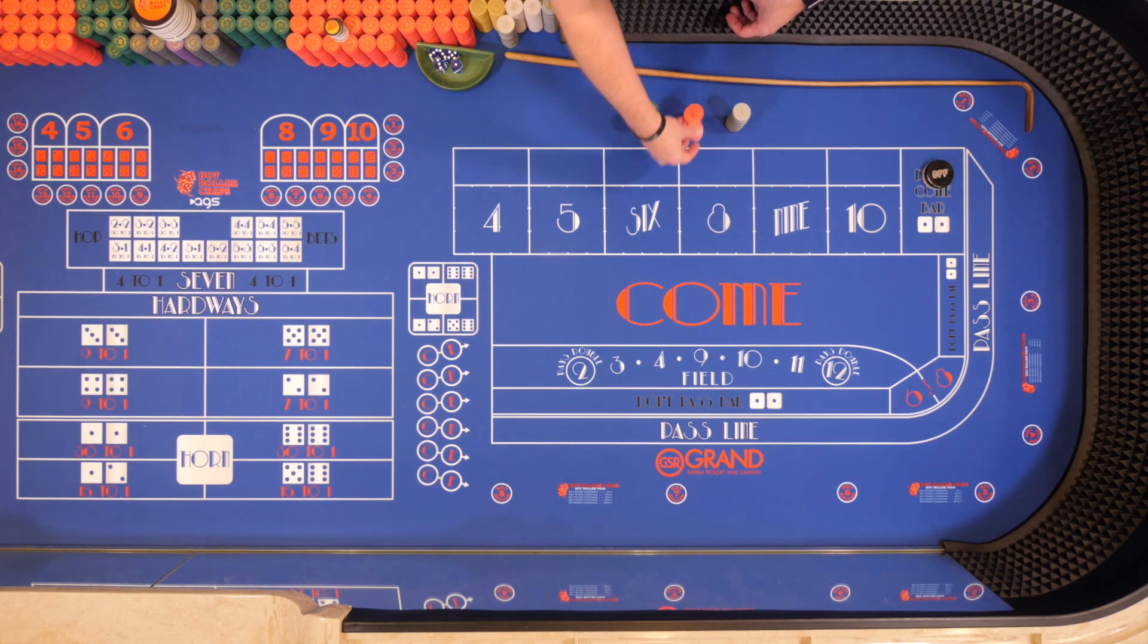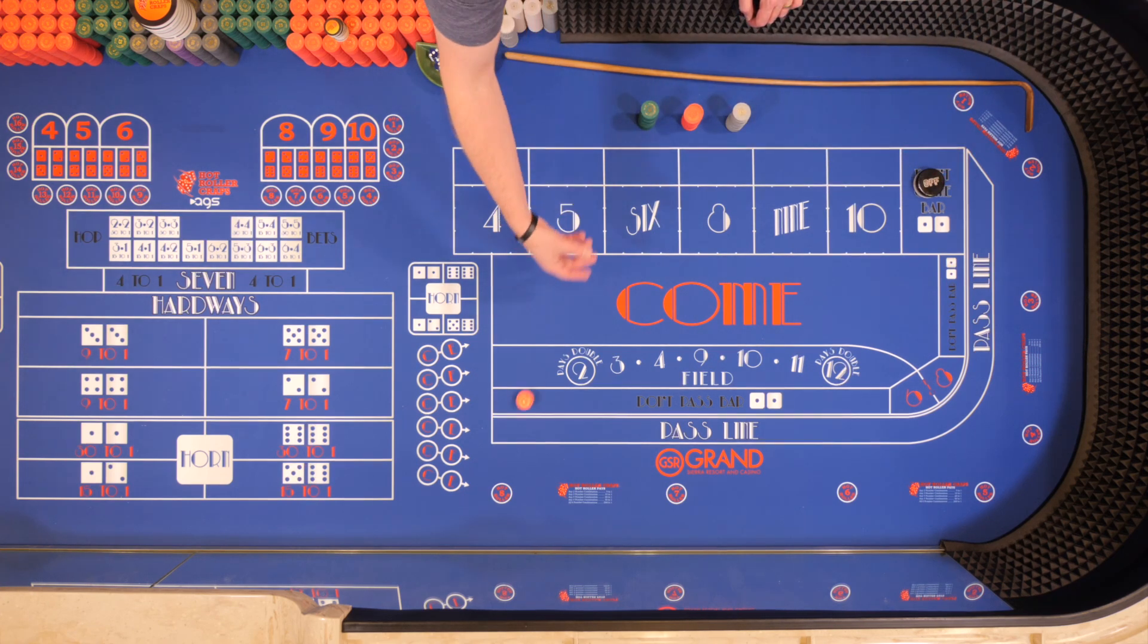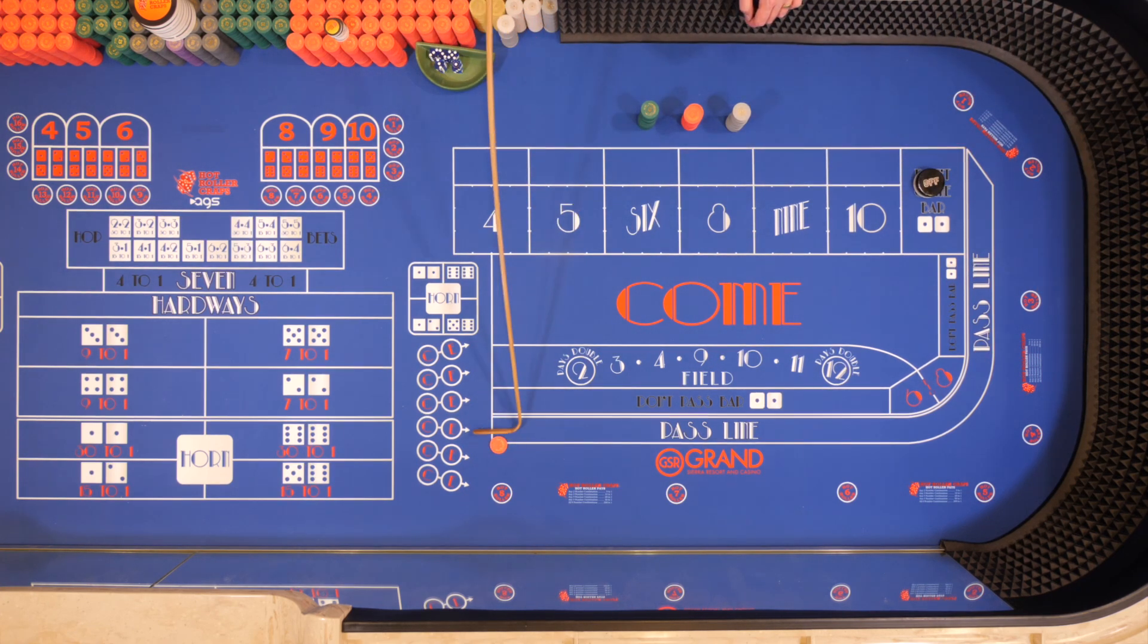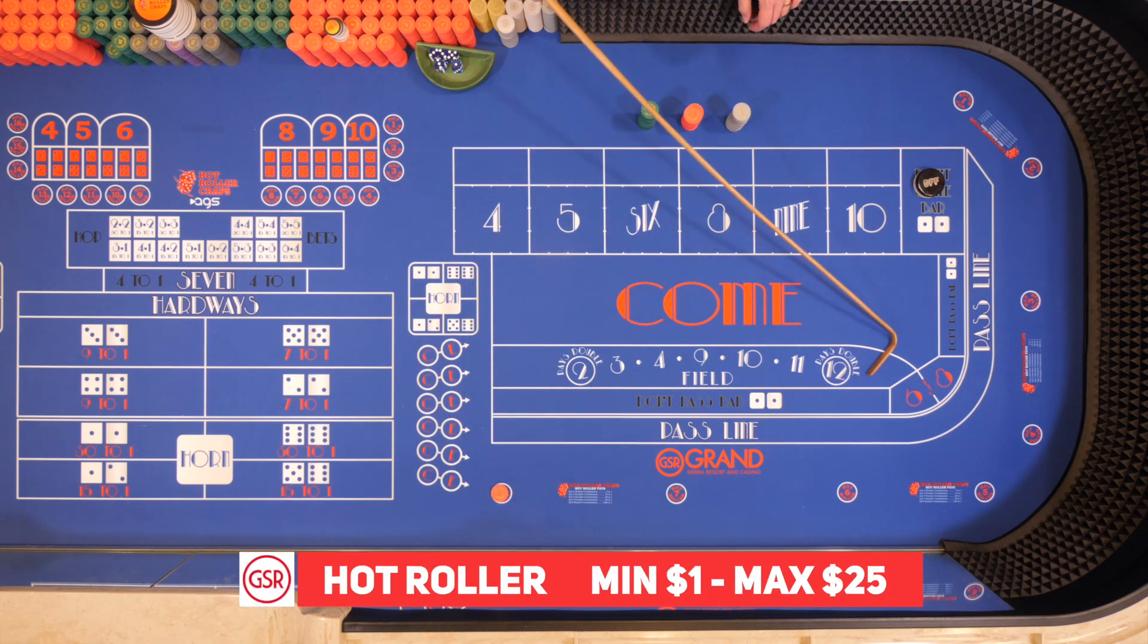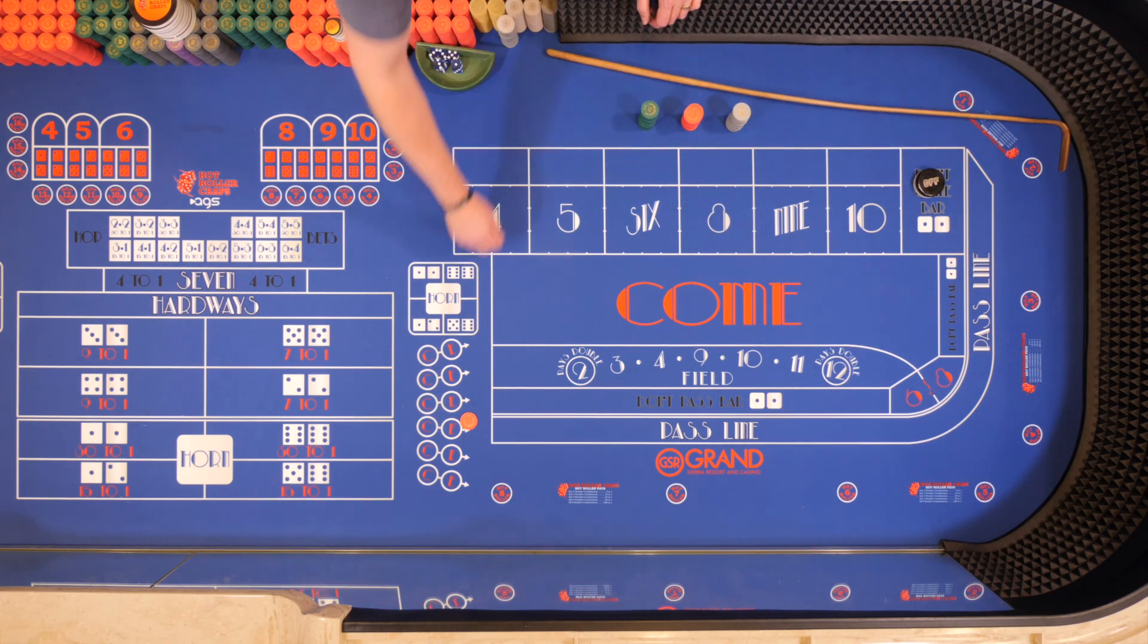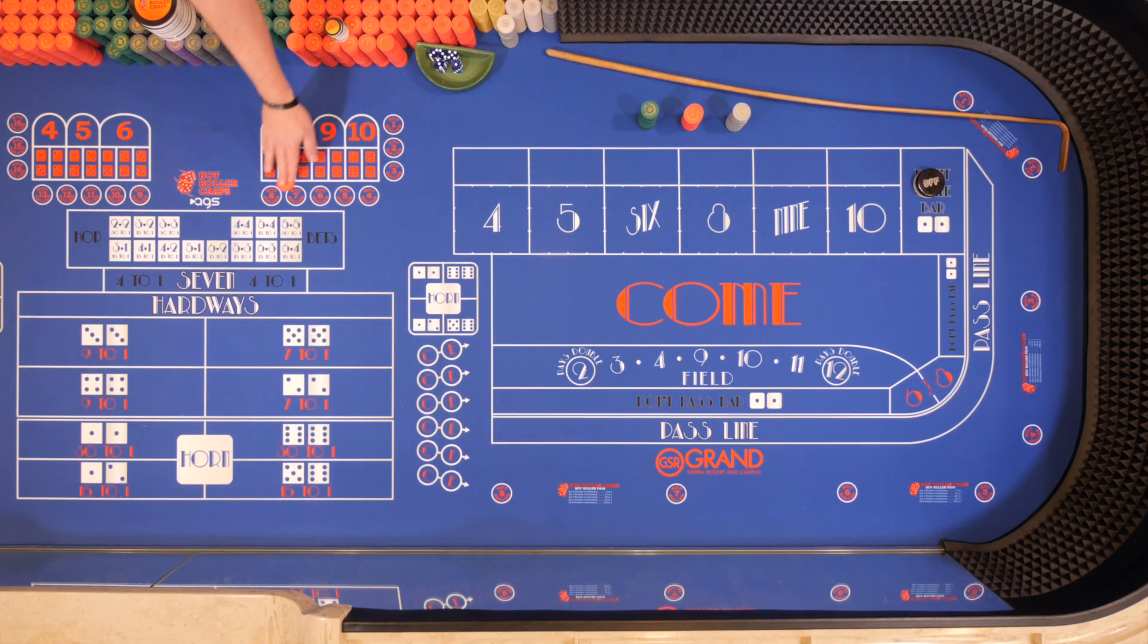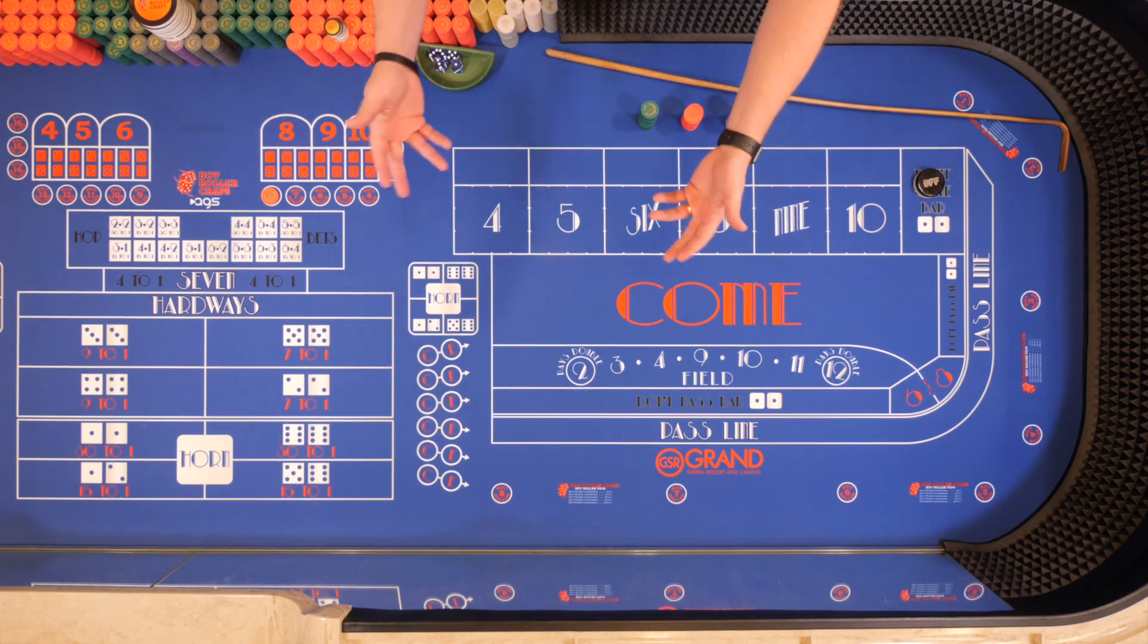You're going to start off making your bet before the Come Out Roll when the puck is in the off position. You'll put it in the little marker spot in front of you. They allow from $1 to $25 here at the GSR. You'll make your bet and then before the game starts, the dealer will collect it. We'll play on position 8 here.